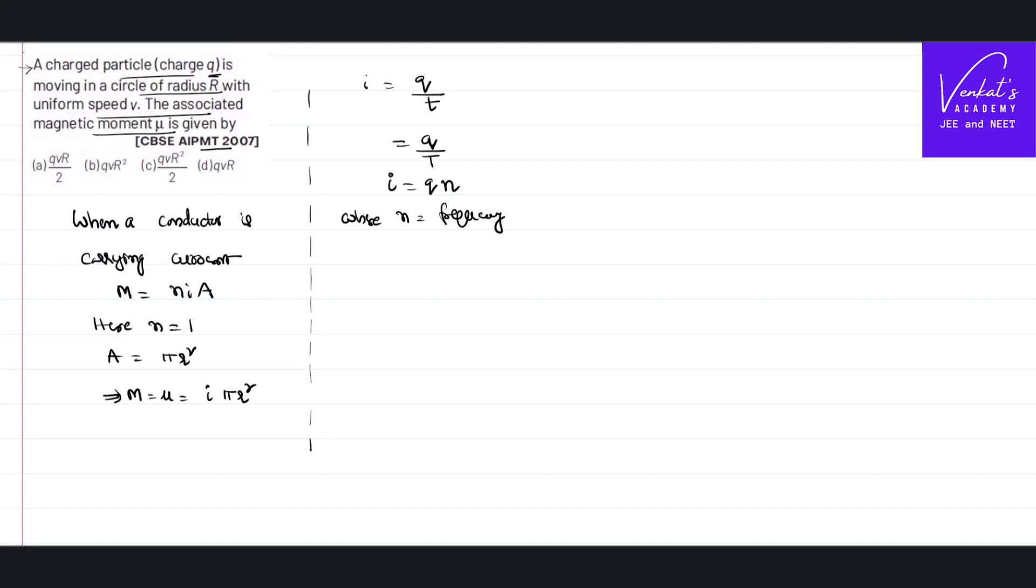So, if you substitute this i in this equation, new magnetic moment is in the place of phi, I can write q n where N is the frequency into pi r square. But still not satisfied the answers that are there.